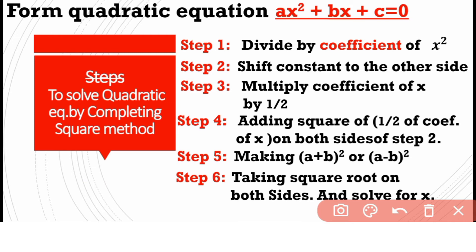Step 5: making (a + b)² or (a - b)² whole square on the left-hand side. It will be maybe the formula of square of a plus b or square of a minus b.